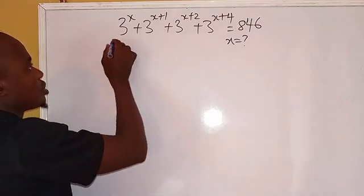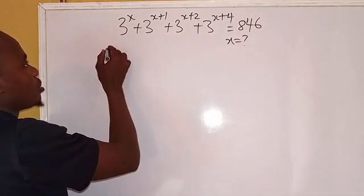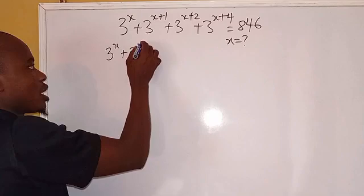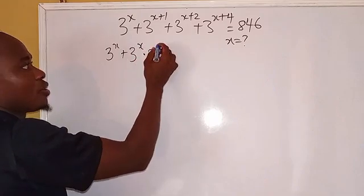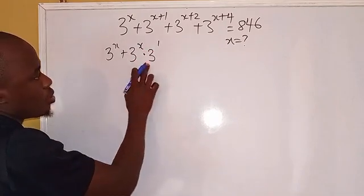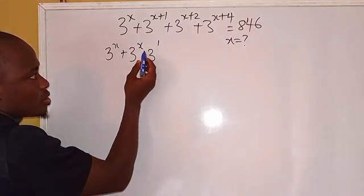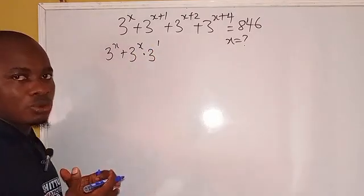So now we can write this equation from the laws of indices like this: 3 to the power of x multiplying 3 to the power of 1. So that if we want to turn back to this, since these are the same bases, the powers will be added.